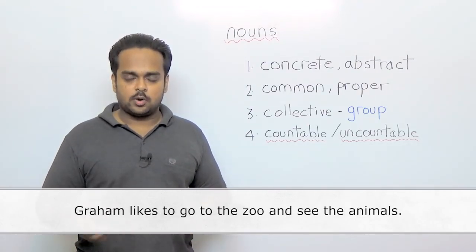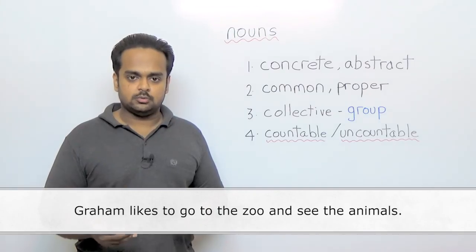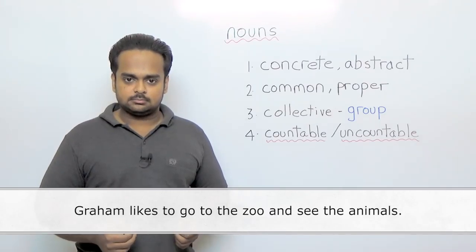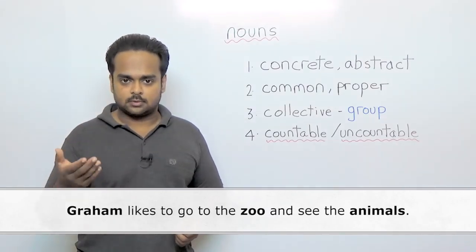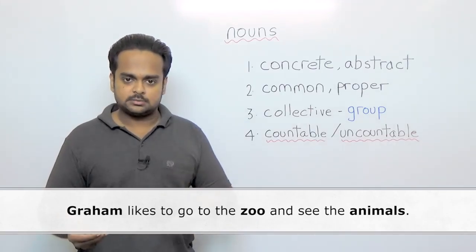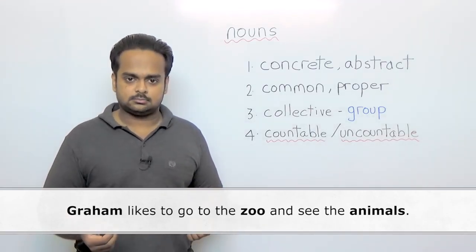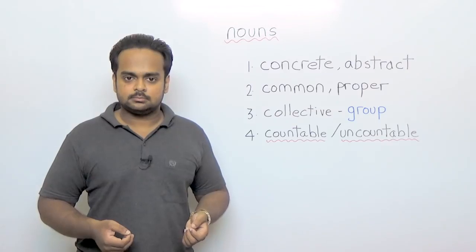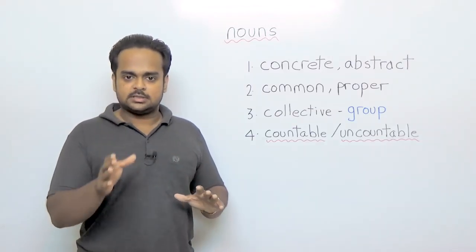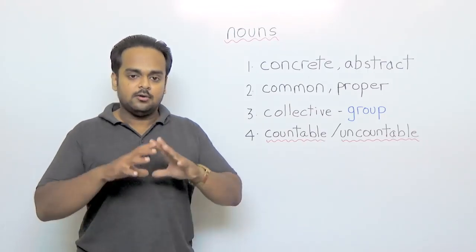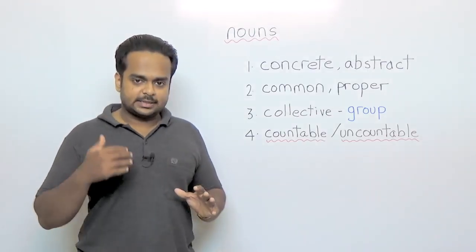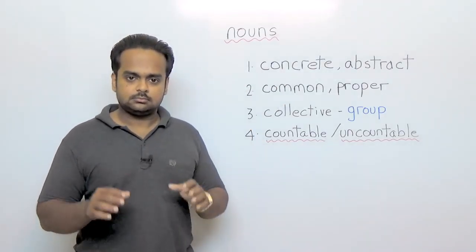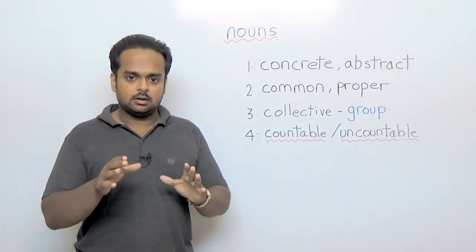For example in this sentence, Graham likes to go to the zoo and see the animals. Here there are three nouns. The nouns are Graham, a person, zoo, a place and animals. Nouns can also be things like watch, t-shirt. And all of these people, places, animals and things are physical. That means we can see them and we can touch them. So they are called concrete nouns. That means they have a real physical existence.